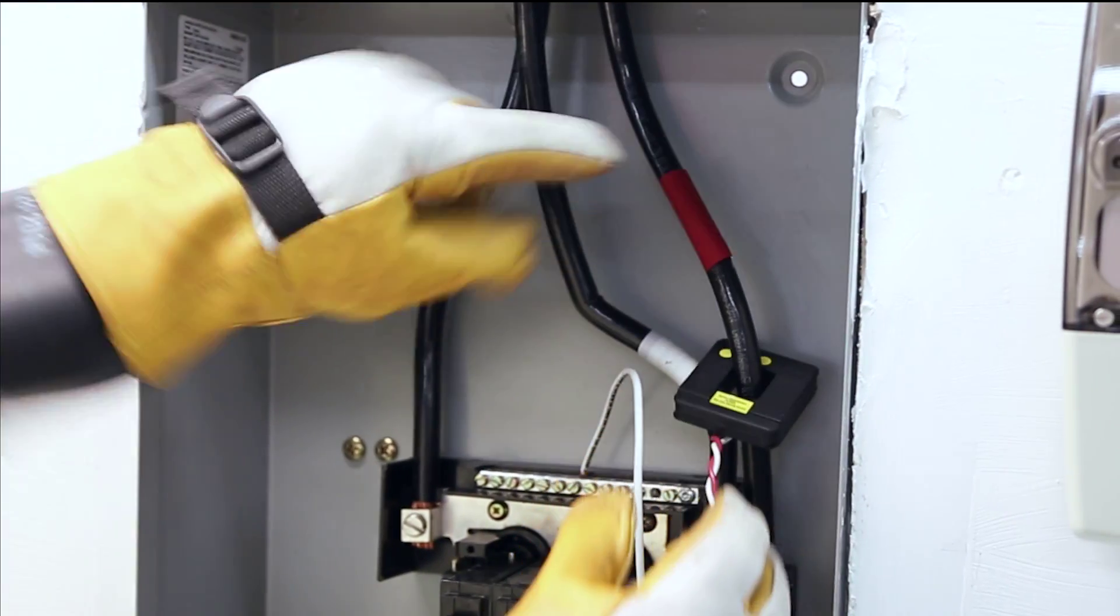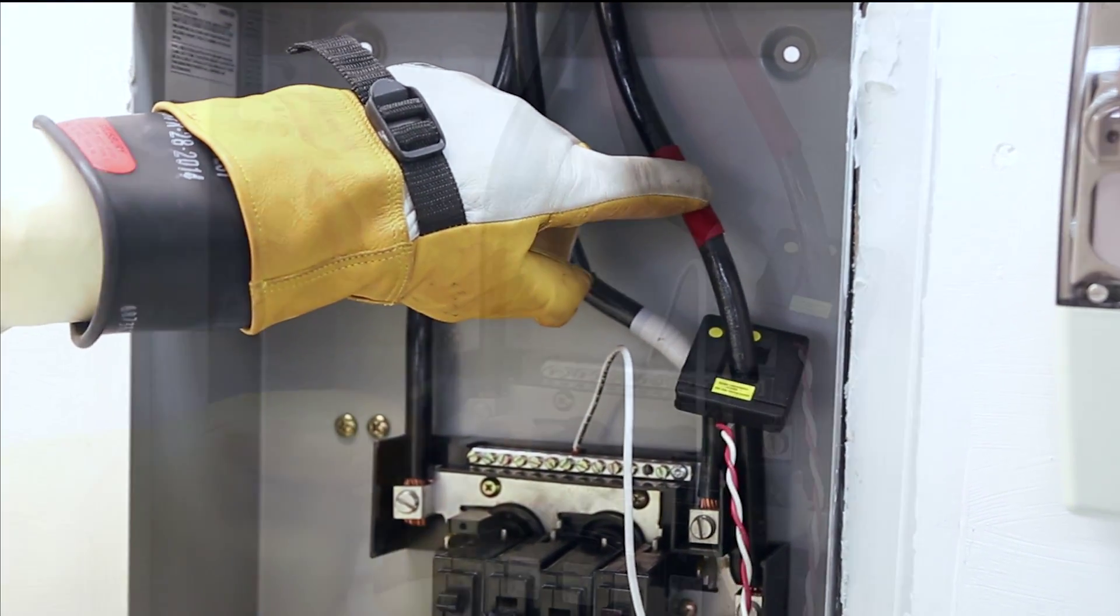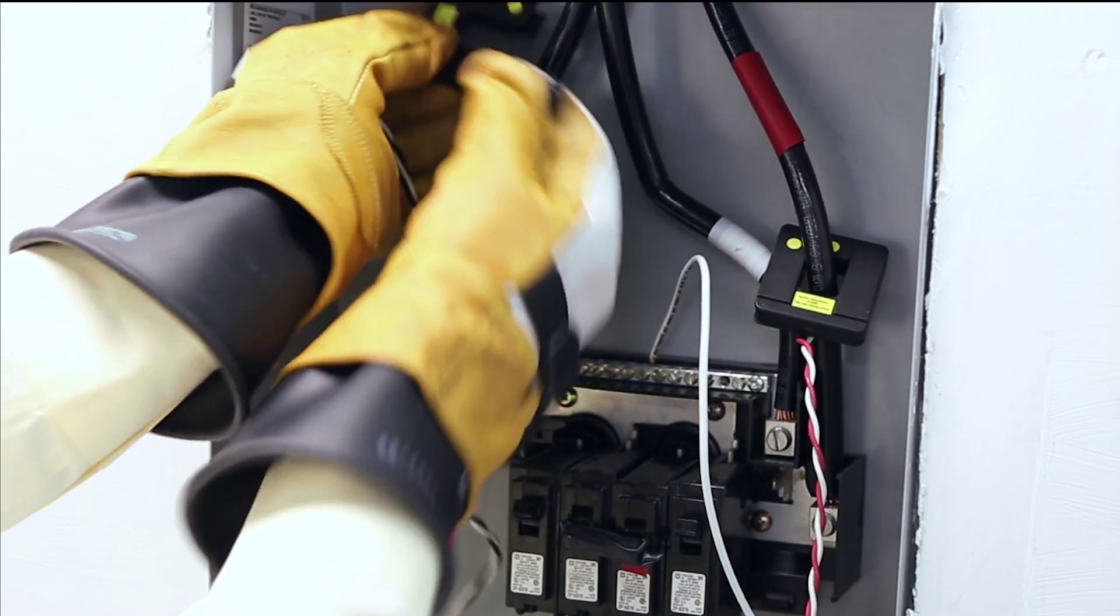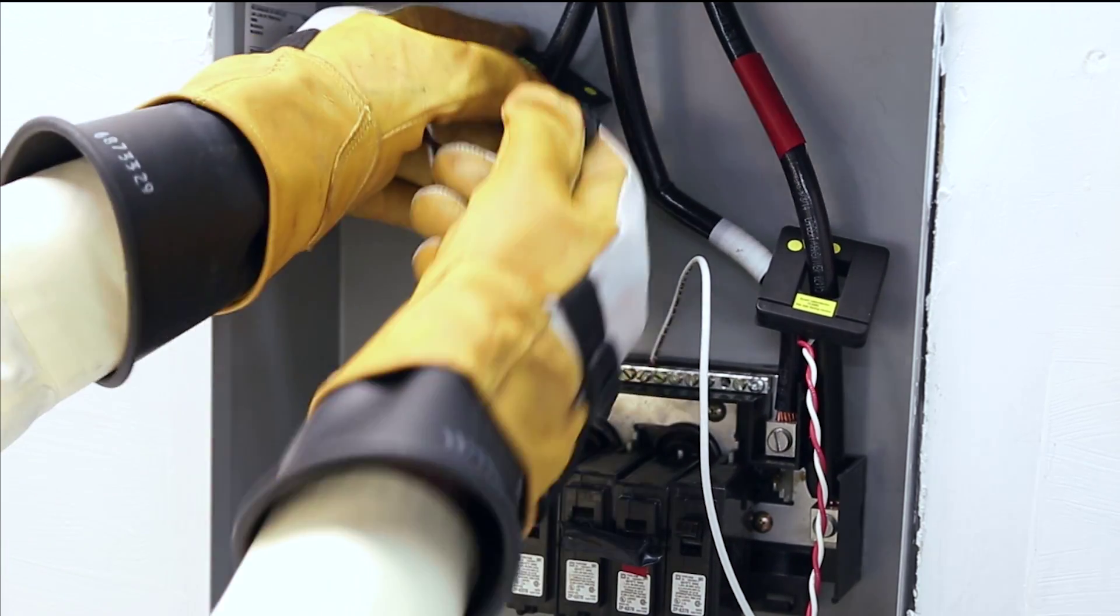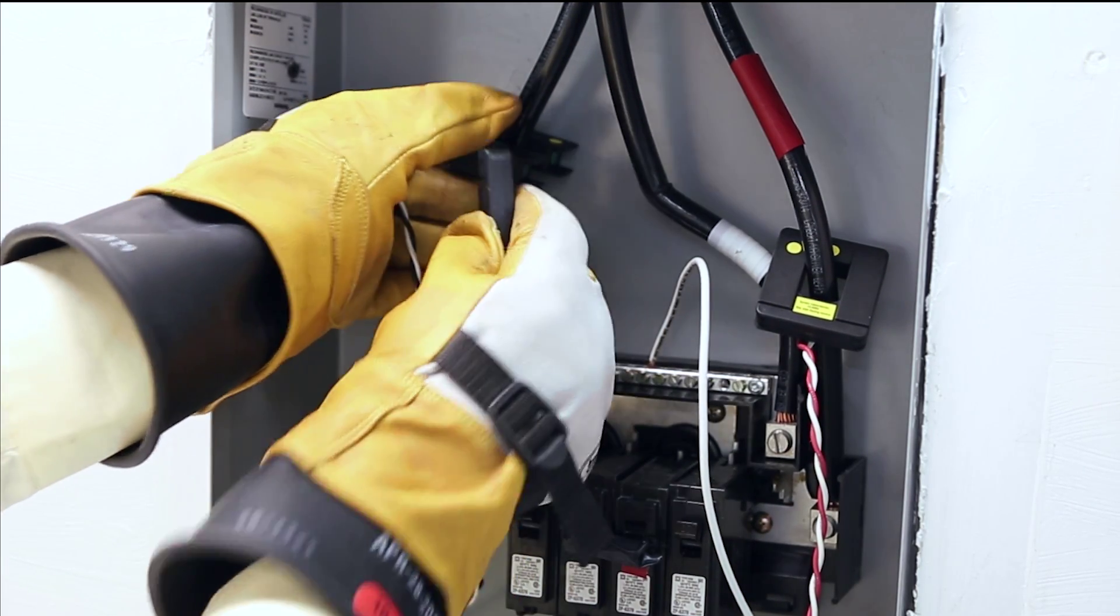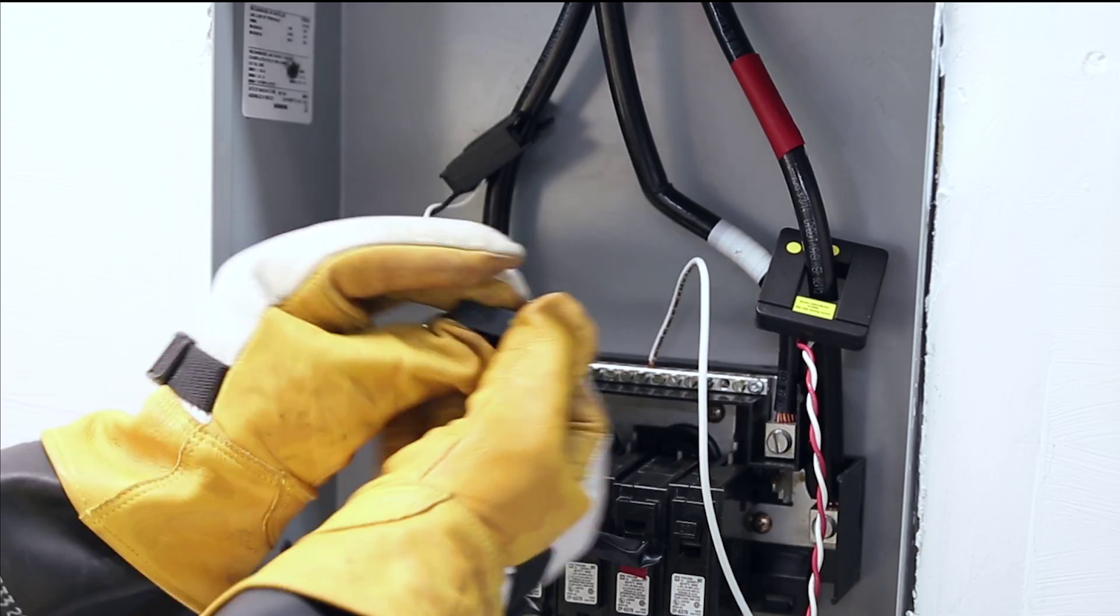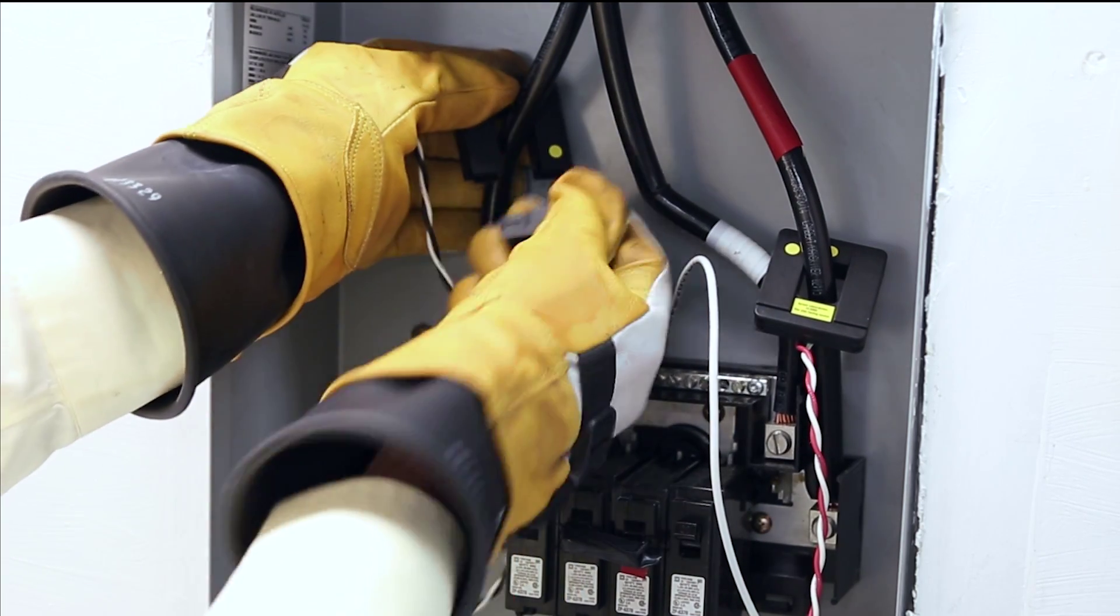The red CT goes with the red incoming power which matches your red voltage. Black line CT goes with the black line. Again, the dots are toward the incoming power. Make sure that the bar or the dot matches the bottom portion.